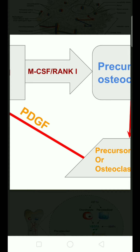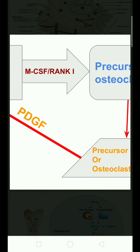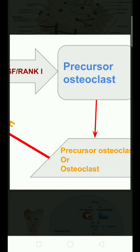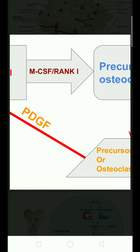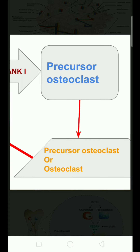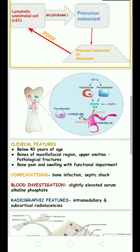If MCSF or RANKL is controlled by some inhibitory proteins, the stimulation of precursor osteoclasts may be reduced. However, the precursor osteoclasts may be highly sensitive to MCSF or RANKL. The etiology remains unknown — it is still unclear what the main reason is for stimulating osteoclast activity. Approximately, we attribute it to lymphatic endothelial cells stimulating precursor osteoclasts, leading to complete bone destruction.